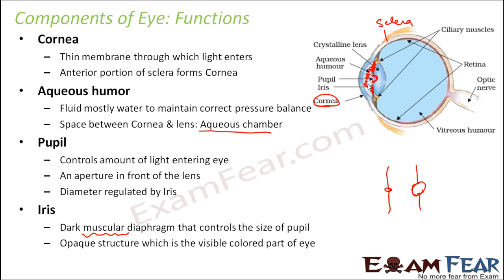The iris is an opaque structure and is the visible colored part of the eye. Looking at the eye from the front: the white portion is the cornea, the small portion at the center is the pupil, and around that is the iris. For some people it is brown in color, for some it is bluish. So cornea, pupil, and iris are the three things visible from outside.